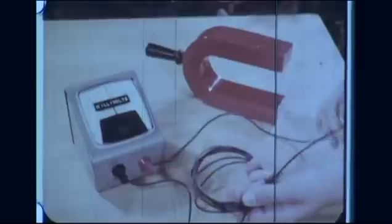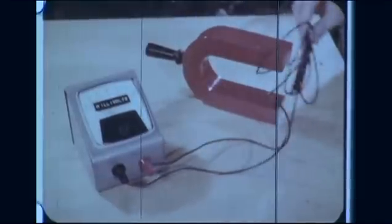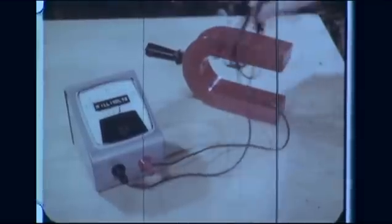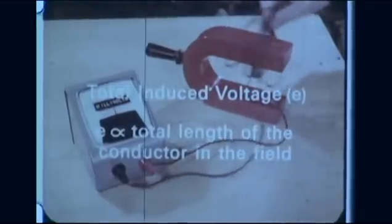To generate a usable voltage that produces current when the circuit is completed, the part of the conductor in the magnetic field should be made very long. This is accomplished by constructing coils. With a coil of several turns, the voltmeter deflection is greater than that for a coil with a single turn, indicating a greater voltage. This is because the total induced voltage is the sum of the induced voltages in the individual turns. Therefore, the total induced voltage is directly proportional to the total length of the conductor in the magnetic field.